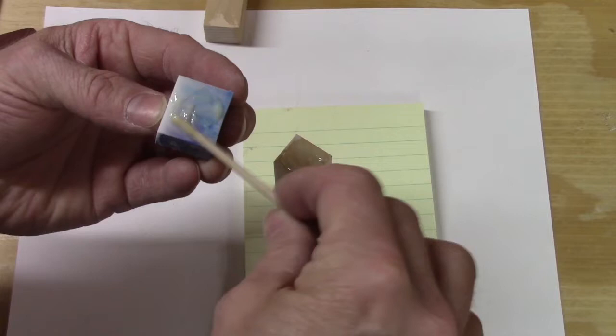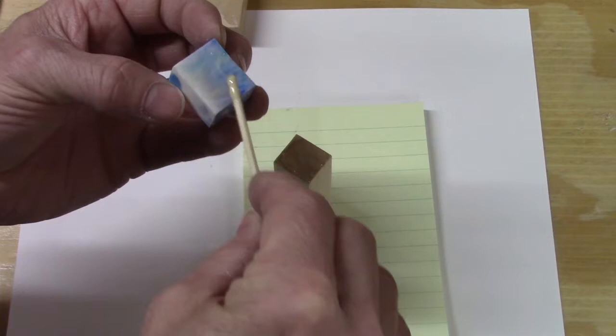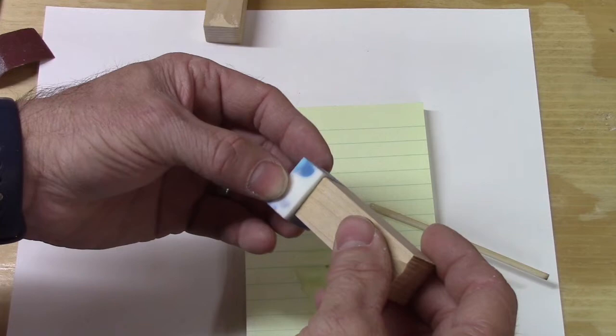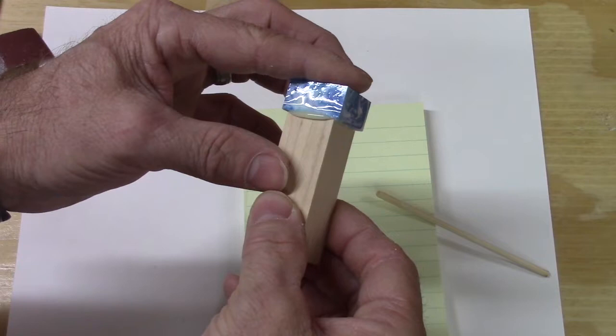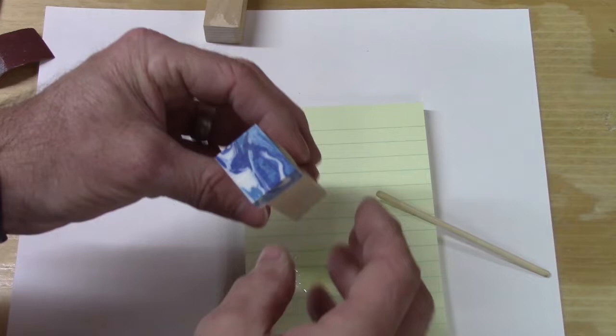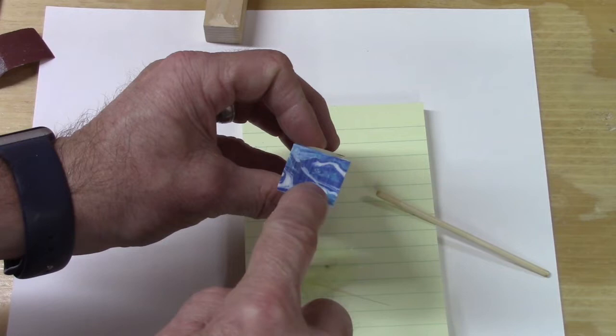You want a nice bond because the last thing you want is for this to come off when you're turning it. All right, and we're just going to take that and we're going to apply it to where it starts to squish out. But you don't want to push it so hard that all of the epoxy squishes out, because then you don't have anything left to complete the bond. So you may want to position this, slide it one way or the other in order to get the center where you want it based on the colors that are going on here.